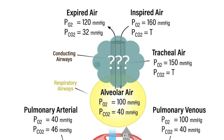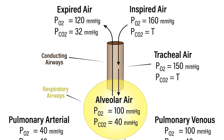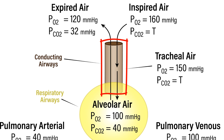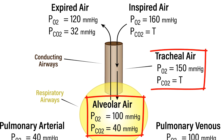You might wonder how the alveolar oxygen goes from 100 to 120 millimeters of mercury in the expired air, and why the PCO2 decreases from 40 to 32. The expired air is the average of all expired air, which includes the dead space air left in the conducting airways at the end of inspiration. During inspiration, most air reaches the alveolar spaces and participates in gas exchange, but some fraction remains in the conducting airways, does not participate in gas exchange, and maintains the gas composition of the tracheal air — a high PO2 of 150 and a very low PCO2. So expired air is simply a mix of the alveolar air and the tracheal dead space air.